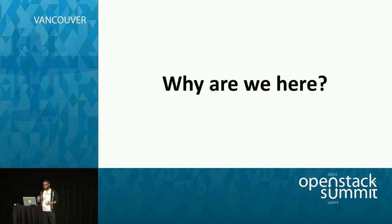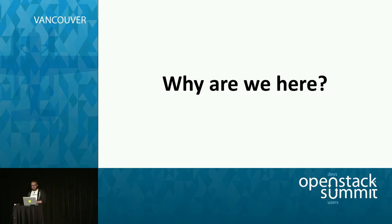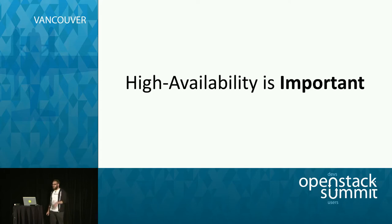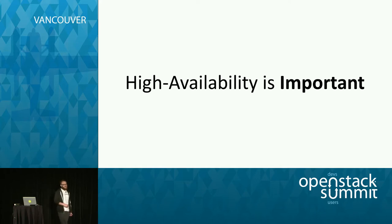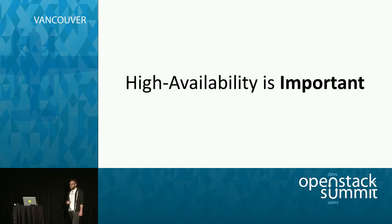So here's the big question: why are we all here? For many of us, this summit is going to be your first exposure to OpenStack — the technology and the community. Others are running large production clouds. But we're all here because we've had the same important realization: high availability is important. It's not just important — it's absolutely critical. Hardware and software will fail, especially at scale. It's not a question of if; it's a question of when and in what way.